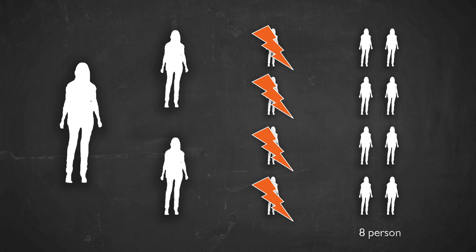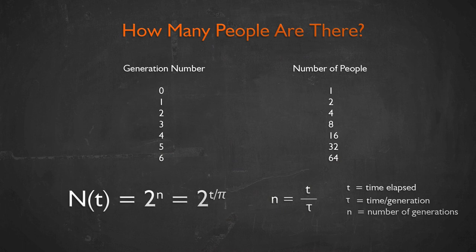Mathematicians call this process where one gives rise to two, which gives rise to four, and so on, exponential growth. We can easily quantify this by writing down a formula: the number of people N equals 2 to the little n, where little n is the number of generations. This reproduces the proliferation I just described.